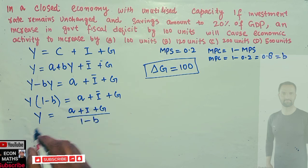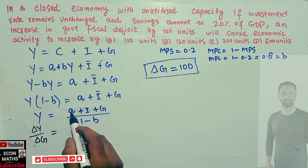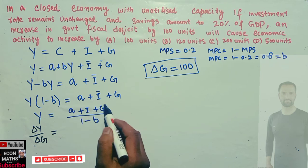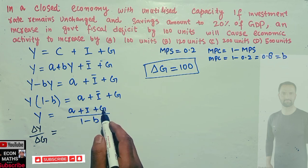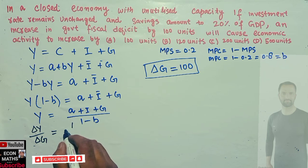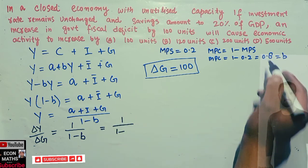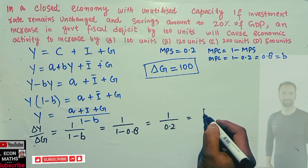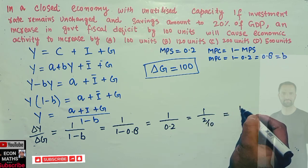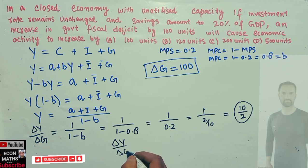We need to differentiate the GDP equation with respect to G — that is, take the derivative ∂Y/∂G. In the function Y = (a + I + G)/(1 − b), the terms a and I are constants, and only G varies, so the derivative of G is 1. This gives us ∂Y/∂G = 1/(1 − b). Since b = 0.8, this is 1/(1 − 0.8) = 1/0.2, which equals 10/2 = 5. This is our multiplier.